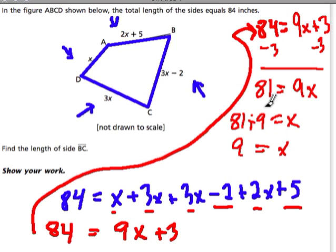But that's not our answer. Our answer is, we want to know what's the length of BC. It's from B to C. And BC is 3x minus 2. So if x is 9, we have to solve 3x minus 2.